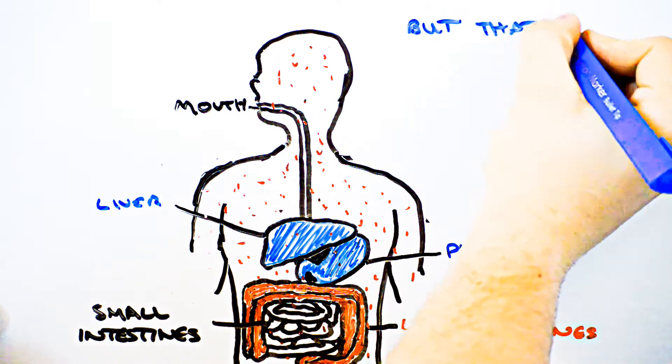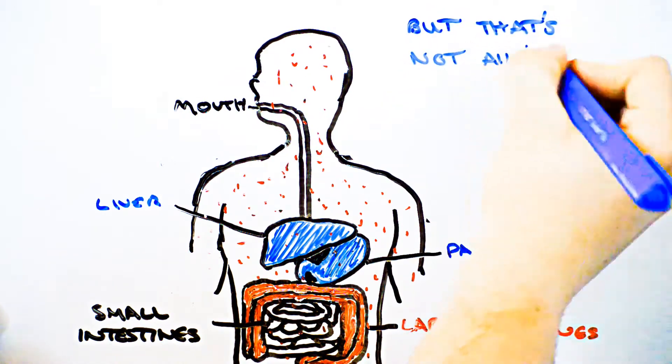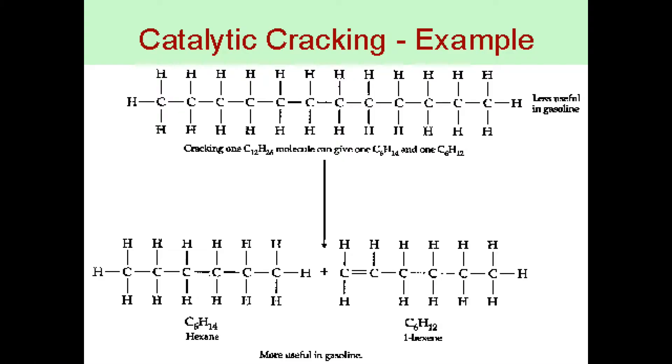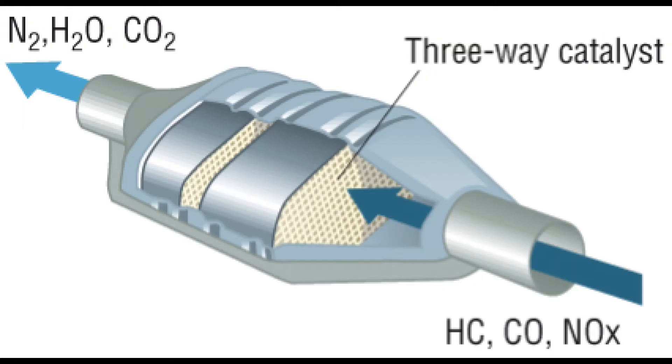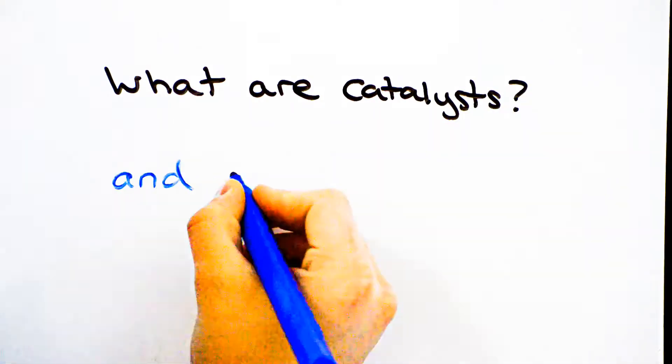But this isn't the limit to what catalysts are used for. They're also used in industry for the catalytic cracking of gas oil, and even in cars to reduce the toxicity of fuel emissions. But what are catalysts, and how do they work?